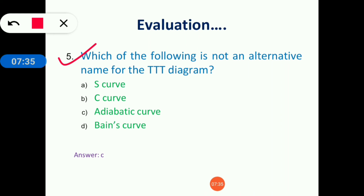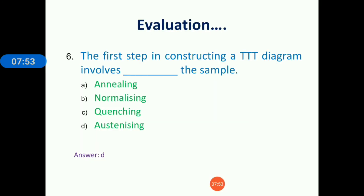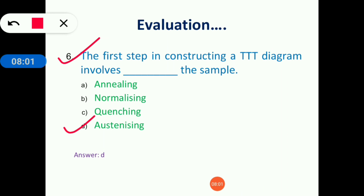Which of the following is not an alternative name for the TTT diagram? The TTT diagram is also known as the S-curve, C-curve, and Baines curve. Therefore the answer is adiabatic curve — that is not an alternative name. The first step in constructing a TTT diagram involves austenitizing, because austenitizing is the first step.